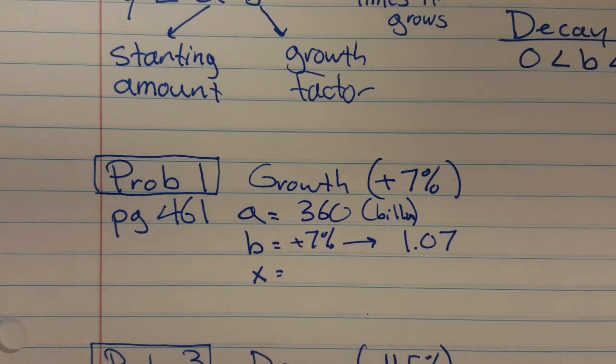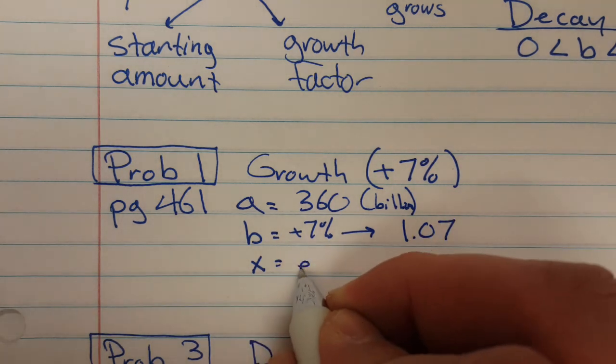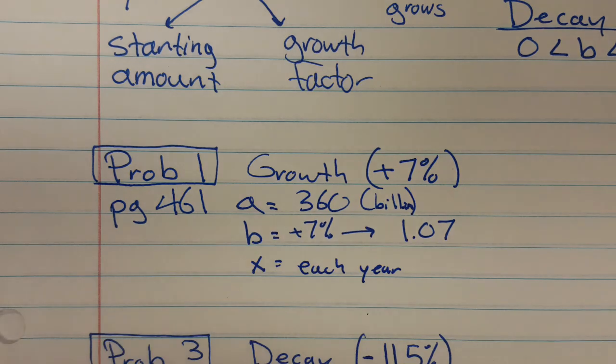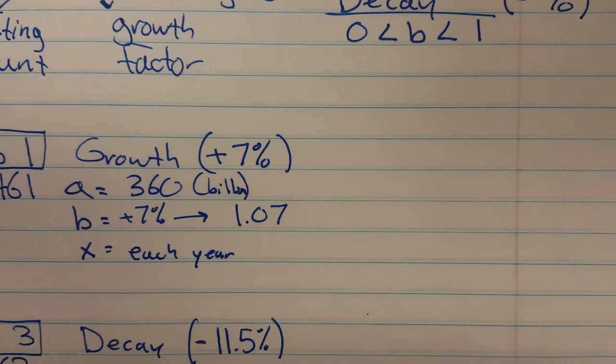And then it says, oh, first of all, we've got to make an equation here, okay, and then x is going to be each year. So if it's growing by seven percent each year, then your x value is going to be, well, each year.